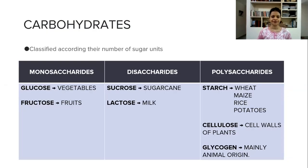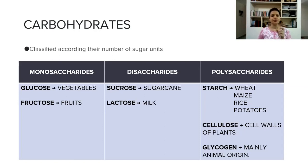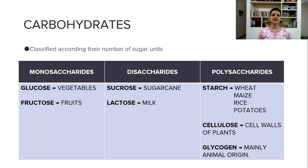The first macronutrient is carbohydrate. Carbohydrate is the fastest source of energy. If you keep a sweet or sugar on your tongue, it will easily get absorbed, because it is a simple carbohydrate and you will get energized immediately. So carbohydrate is the fastest source because it gets absorbed very easily.